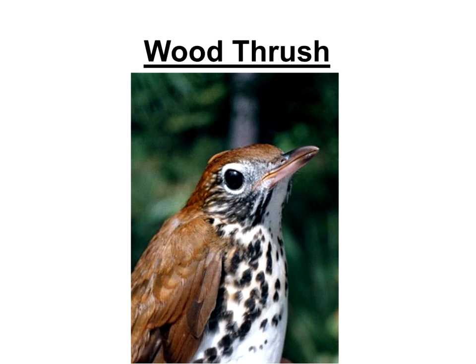Wood thrush is again a neotropical migrant that uses similar habitat to the Acadian flycatcher, but it's a bit more adaptable to suburban development. I do see them in some natural areas around Raleigh in the metropolitan area. You may be able to get this bird in your backyard during migration, especially fall migration when it seeks out fruits. I'll talk about some fruit-producing plants you might target to attract birds like wood thrush in a bit.